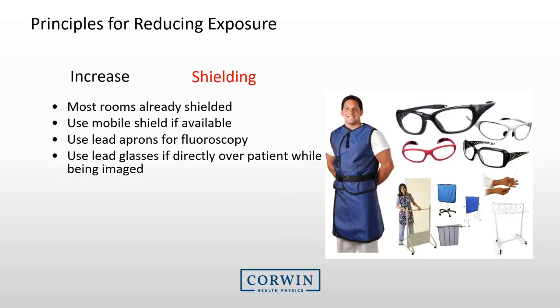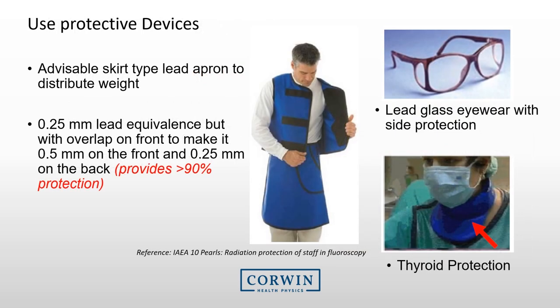Another easy way to reduce your radiation exposure is to wear a lead apron, which can reduce radiation exposure to your body by 90 to 95 percent. Always wear the lead apron when in the room during fluoroscopy. If you are near the patient providing care, also use lead equivalent glasses and a thyroid protective shield. A skirt-type lead apron is favorable for individuals who wear lead aprons frequently, as it helps distribute the weight better. Lead equivalent glasses with side protection and thyroid shields are also available.